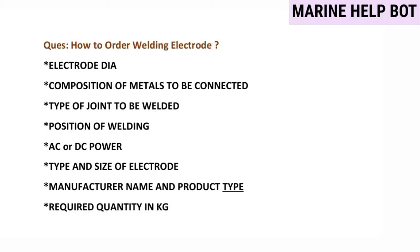How to order welding electrode is a question mostly asked on the welding topic. The accepted answer is based on the ordering list from the IMPA logbook. You should know: the electrode diameter, composition of the metals to be connected, type of joint to be welded (butt joint, T-joint, etc.), position of welding (1G, 2G, 3G, 4G), AC or DC power type, size of electrode, manufacturer name and product type, and required quantity in kg.